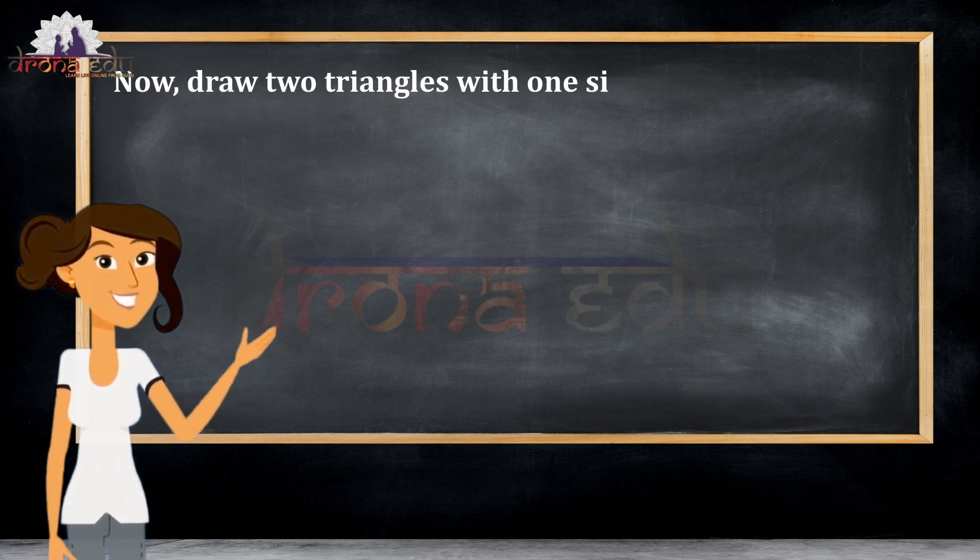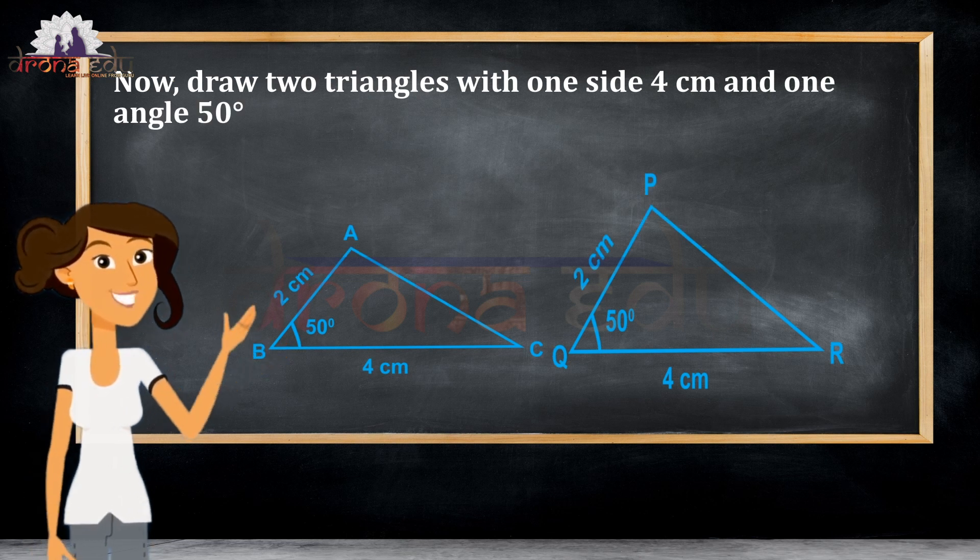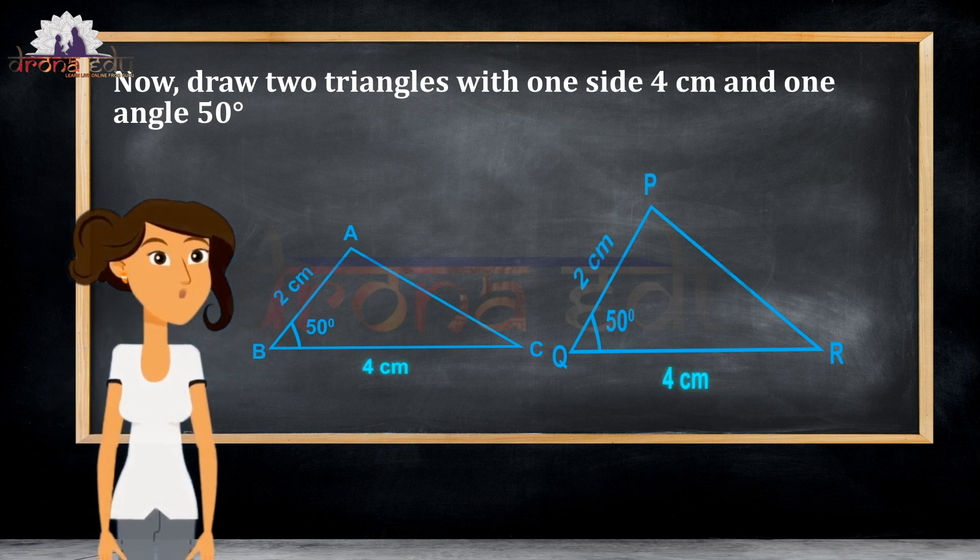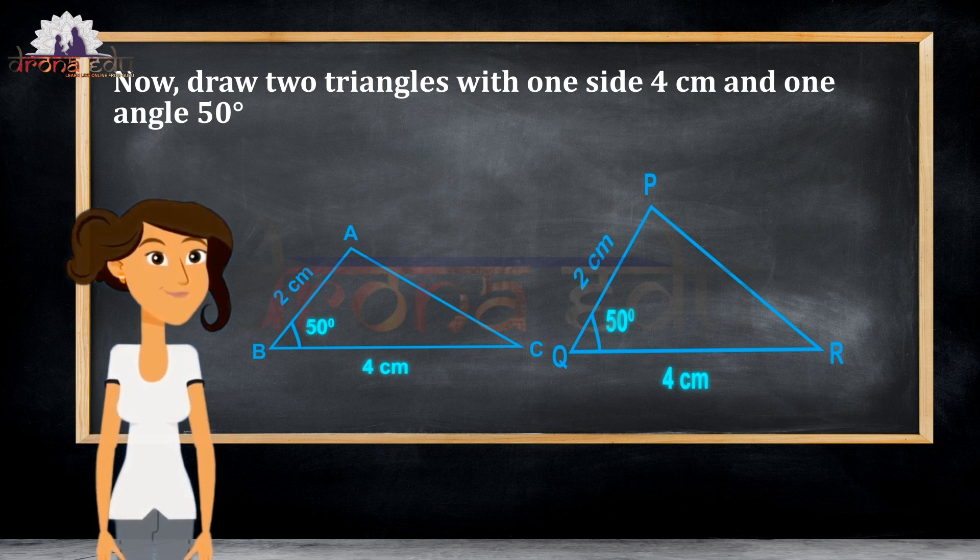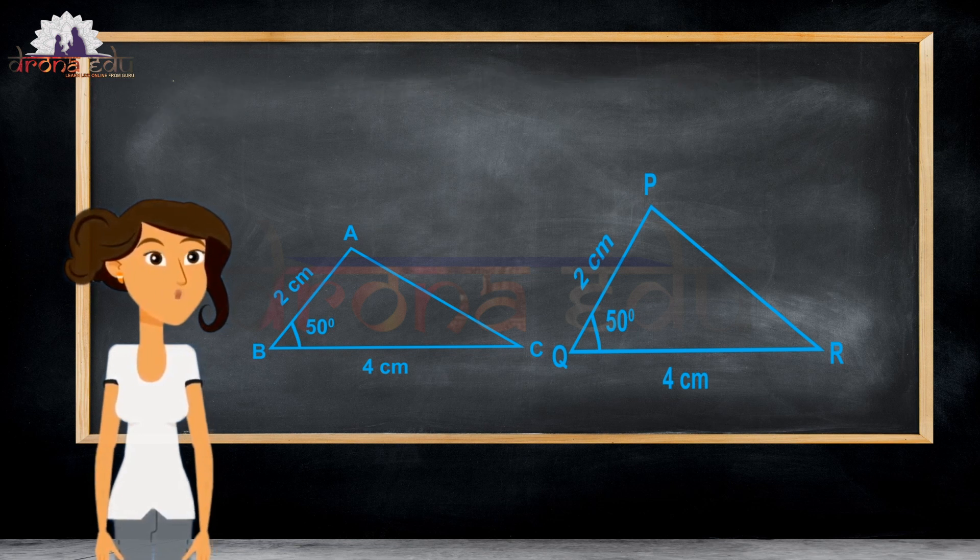Now, let us draw two triangles with one side as 4 cm and one angle as 50 degrees. After drawing, I get two triangles like this, which are ABC and PQR.